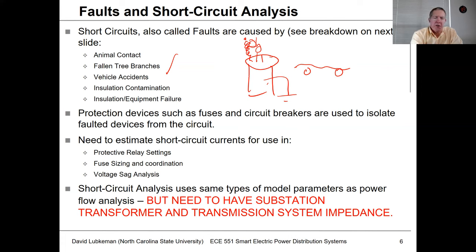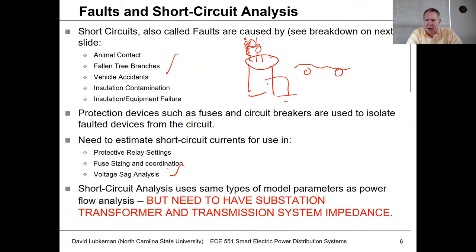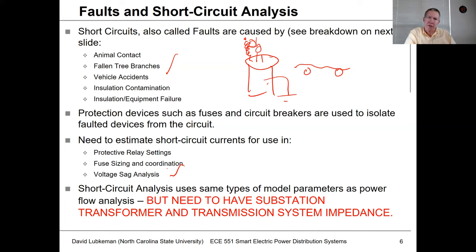From short circuit analysis, we can also determine the amount of voltage sag on unfaulted buses as a result of the fault. The parameters used are very similar to power flow. The big difference is that in a fault, the line regulator can't regulate voltage — voltage collapses due to the large current, and the fault event occurs so fast the tap doesn't have time to change anyway. So we need a model that includes the net impedance all the way to the generation source. That's the main difference between short circuit and power flow analysis.